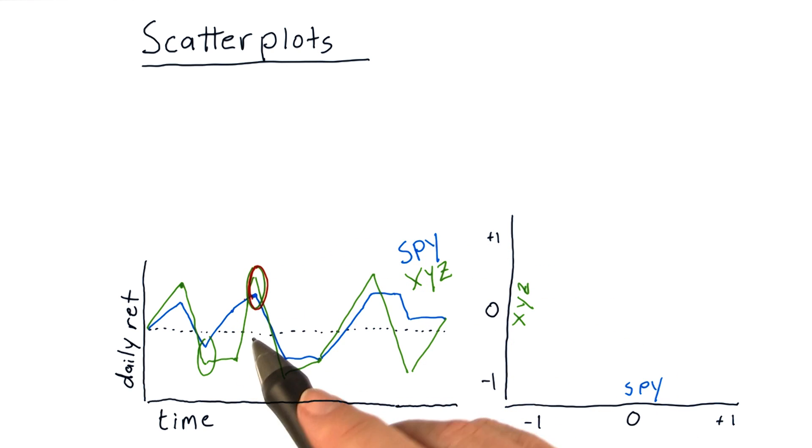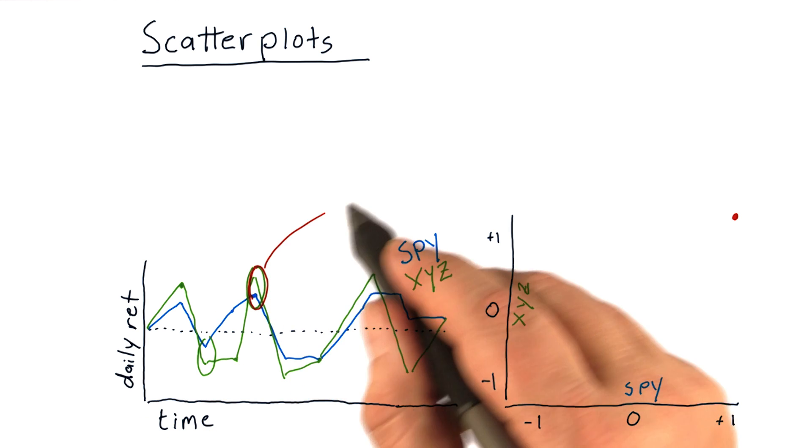So let's look at this particular day. On this day, SPY was positive, close to plus one. So we'll look at plus one on SPY. And XYZ was about plus one as well, but a little bit larger. So that day would correspond to a point about there.